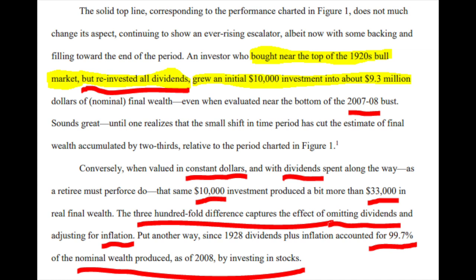Conversely, when valued in constant dollars — adjusted for inflation — and with dividends spent along the way, as a retiree must do, the same $10,000 investment produced a bit more than $33,000 in real final wealth. The 300-fold difference captures the effect of omitting dividends and adjusting for inflation. Put another way, since 1928, dividends plus inflation accounted for 99.7% of the nominal wealth produced as of 2008 by investing in stocks.